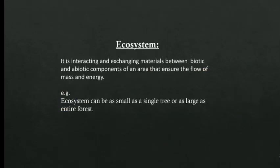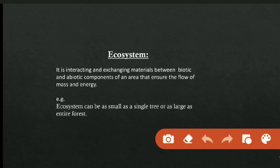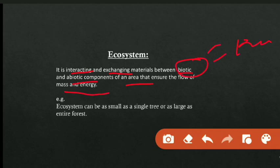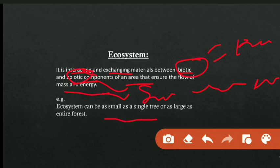Next is ecosystem. An ecosystem involves interacting and exchanging of materials between biotic and abiotic components of an area, ensuring the flow of mass and energy. Biotic components include plants, animals, human beings, and microorganisms. Abiotic components include soil, water, and air. For example, an ecosystem can be as small as a single tree or as large as an entire forest.